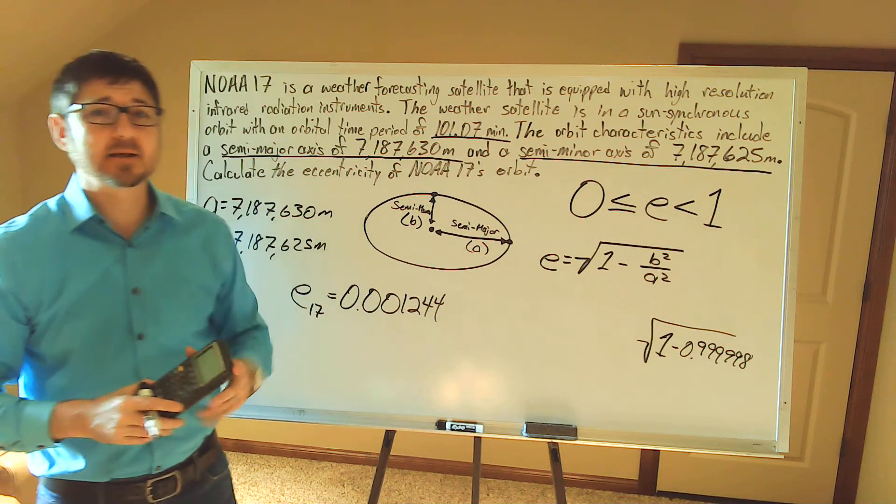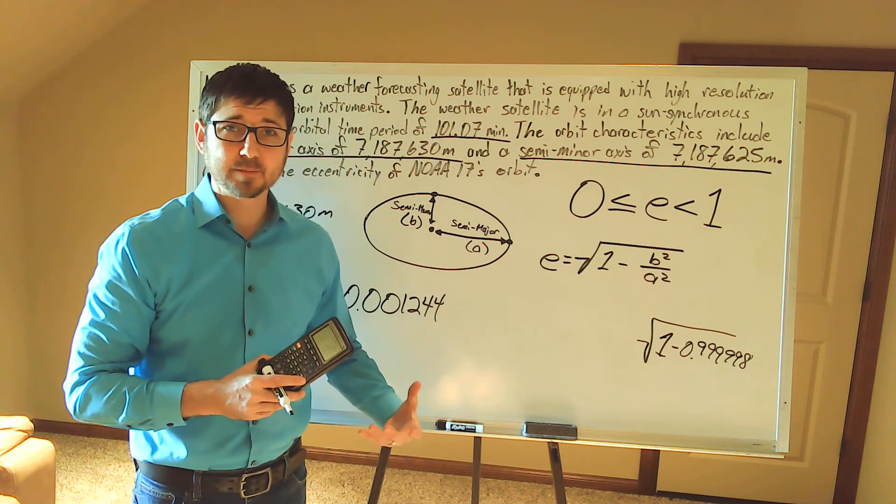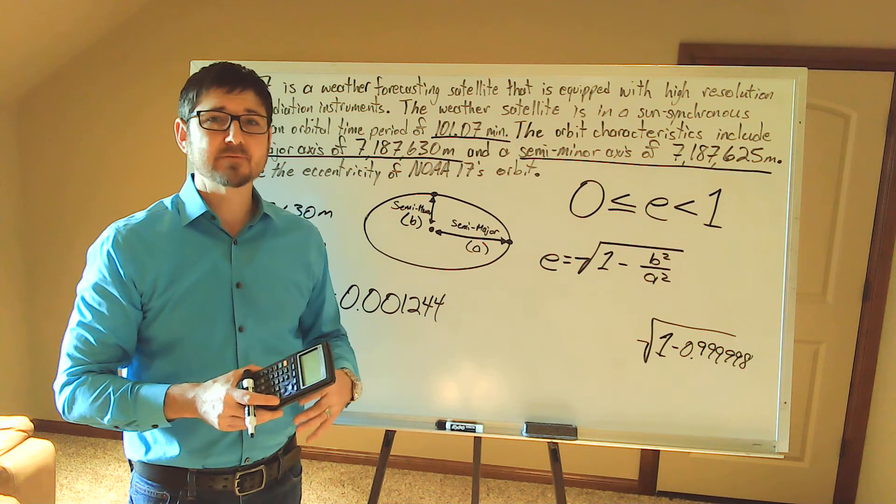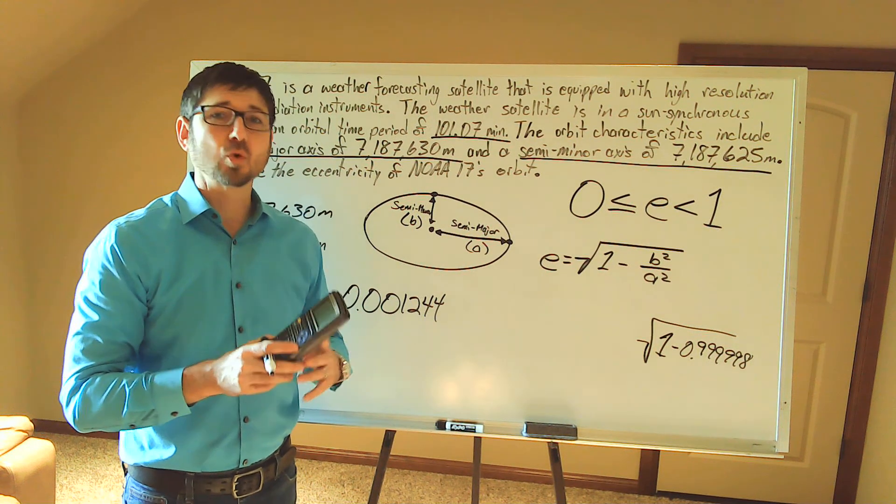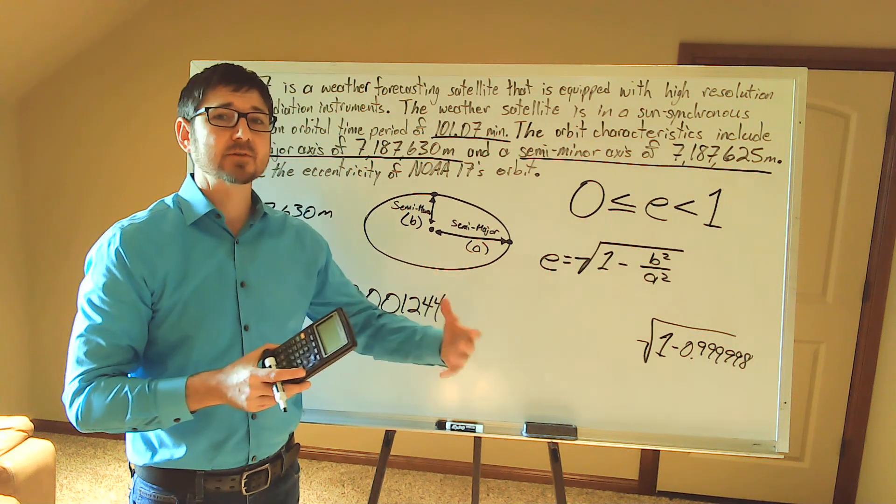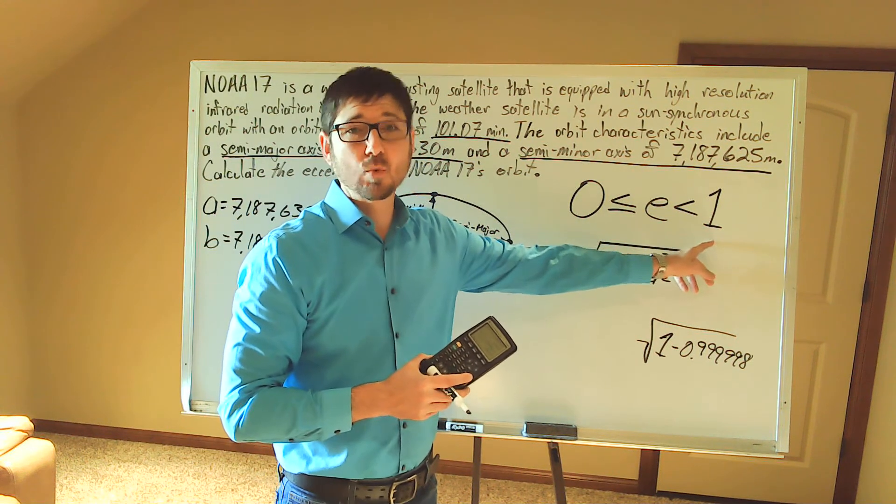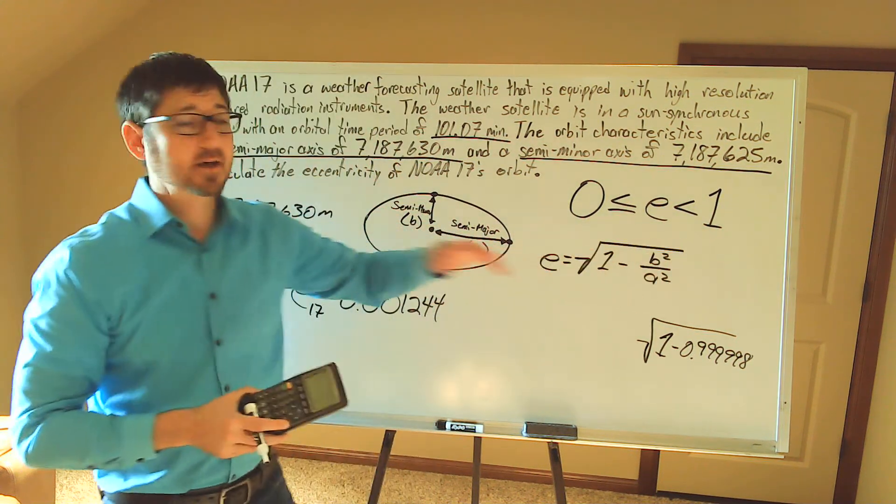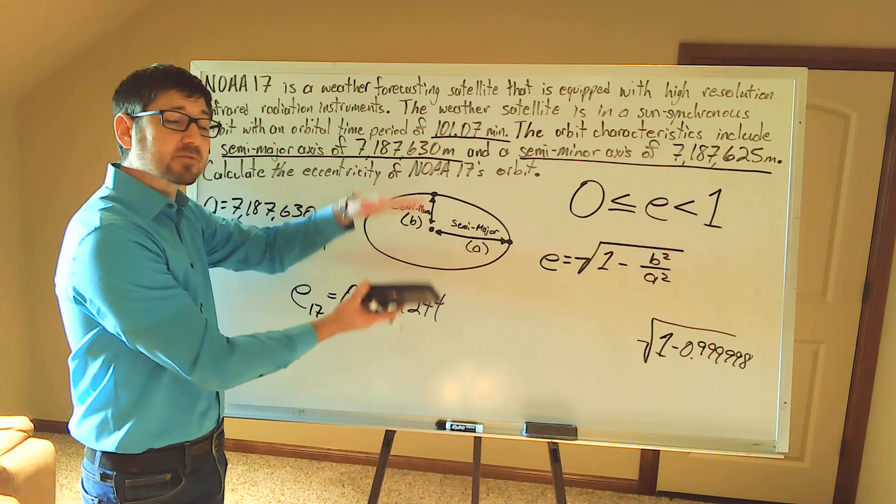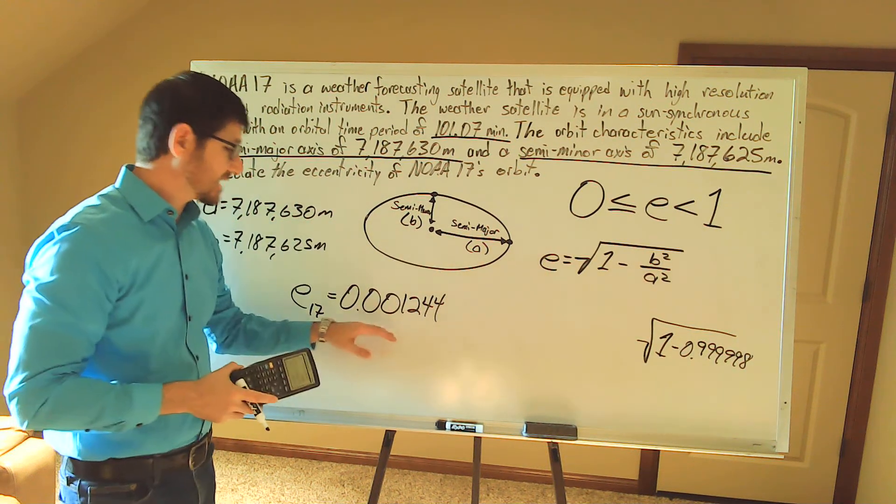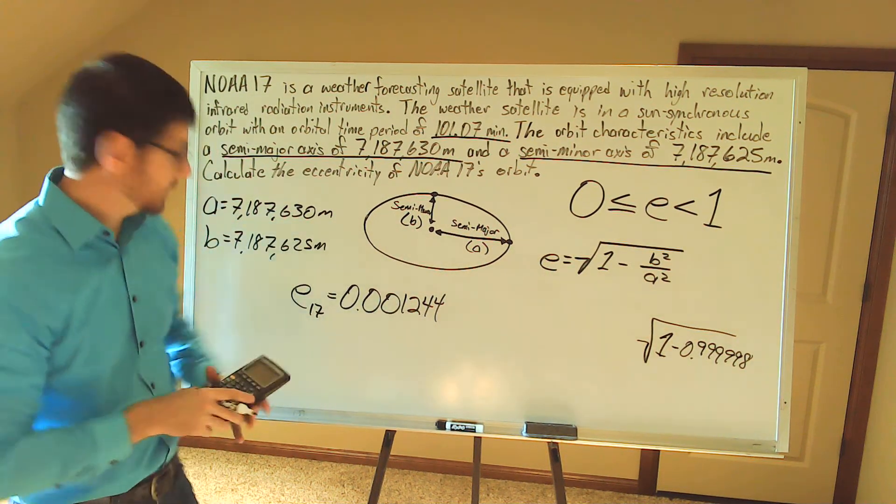Remember, eccentricity describes the roundness of an orbit. So the smaller the value, the more round the orbit is. The greater the value up to a value of one, but not including one, the more squished or the flatter the orbit. So this is a very round orbit.